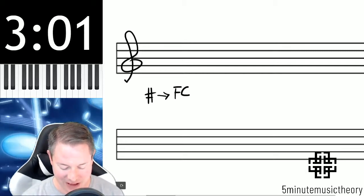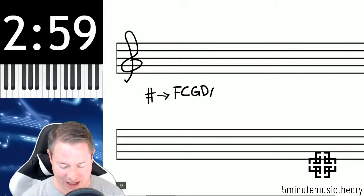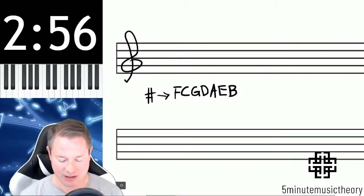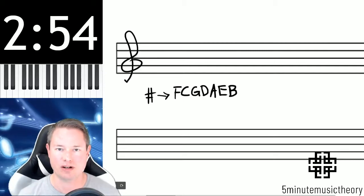So like I said, F and C are the first two sharps, and then from there we go F, C, G, D, A, E, B. Those are the sharps and the order of the sharps.